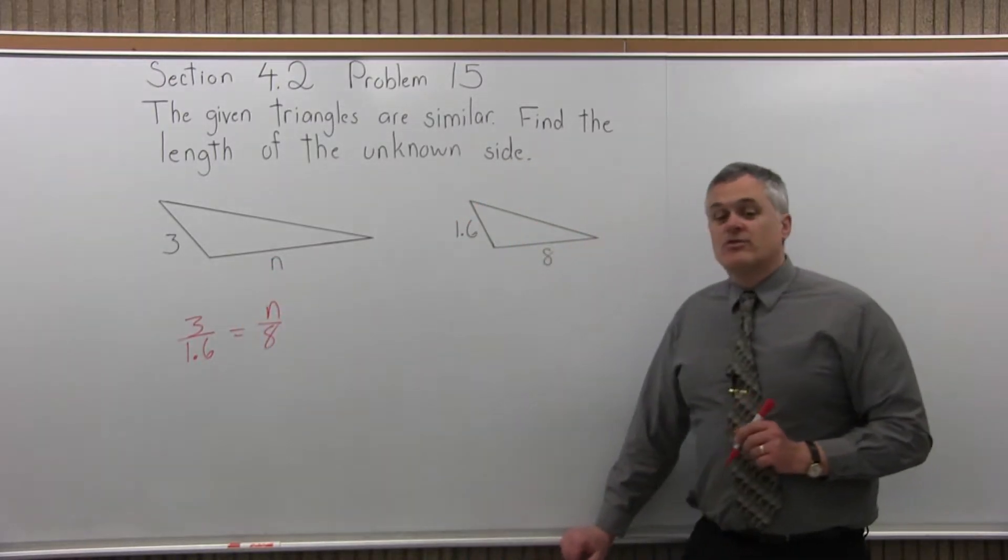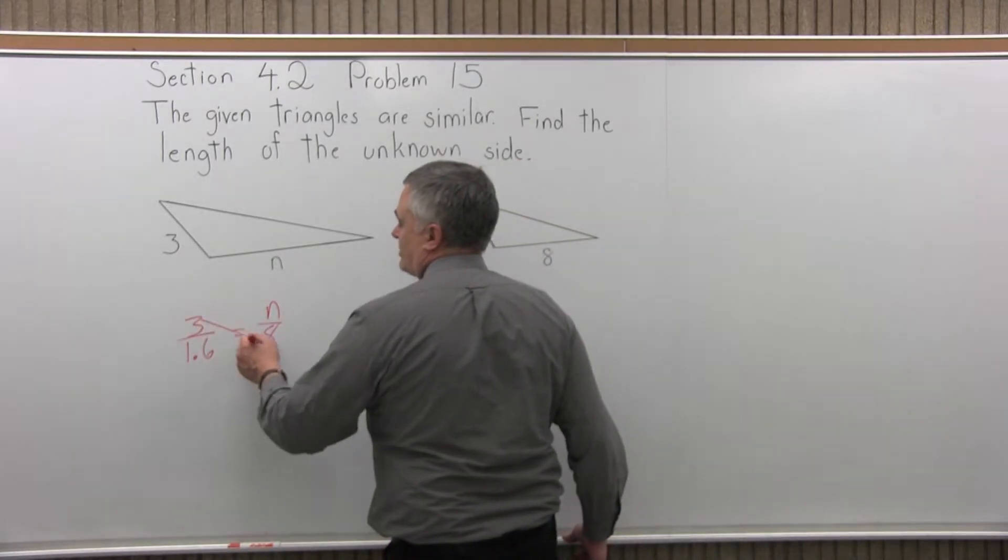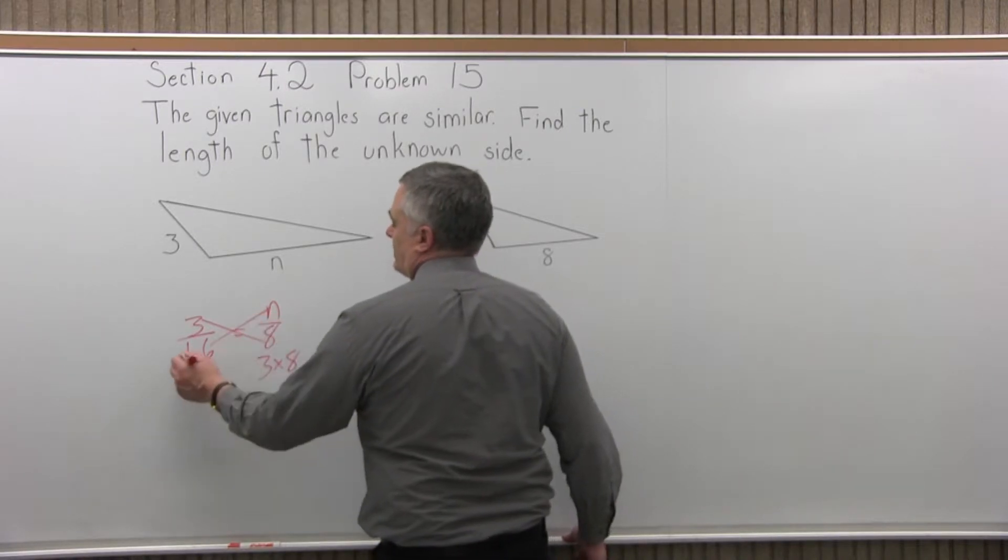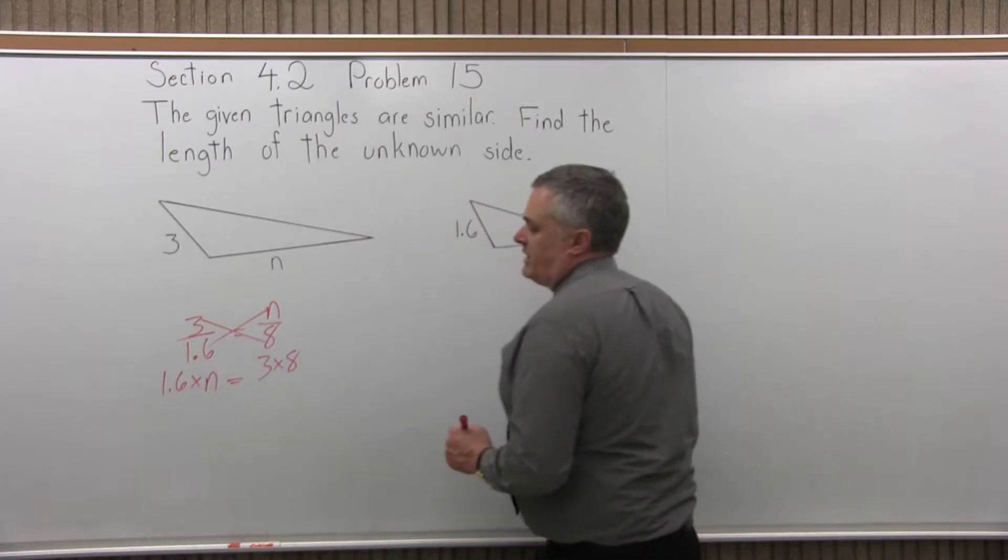So now we have two fractions that are equal to each other. Find the solution by cross-multiplying and dividing. So as you multiply across one way we'll have 3 times 8 and multiply the other way 1.6 times n. And they're equal.